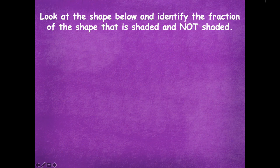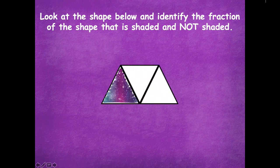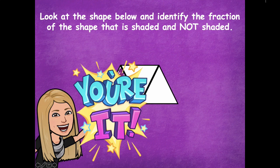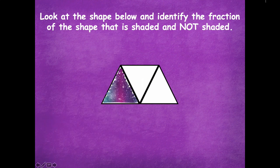Let's look at another one. Write what's shaded and not shaded in fraction form. Pause the video, write the fraction form for shaded and not shaded, then click play when you're ready to go over it together. This shape is split up into three equal parts.